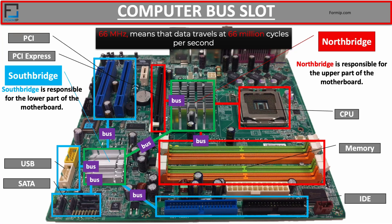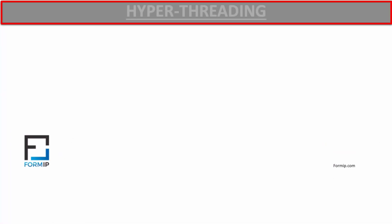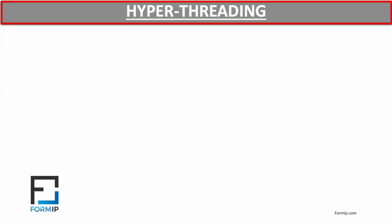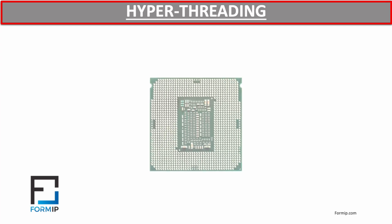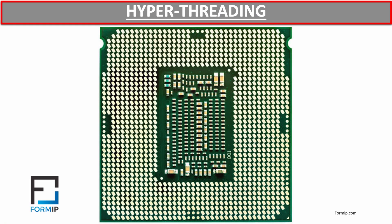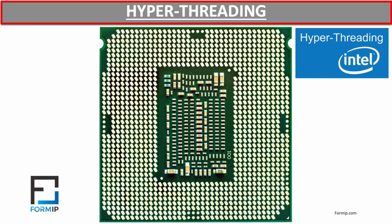When we talk about the bus speed of a motherboard, it basically refers to the speed of the front bus. The FSB, or Front Side Bus, is the connection between the CPU and the north chipset. Before moving on to the bus locations, we will quickly talk about hyper-threading.